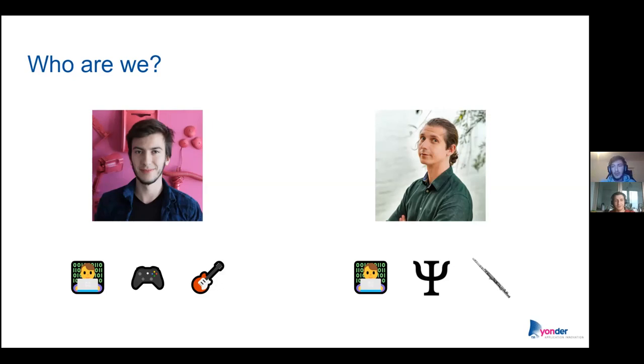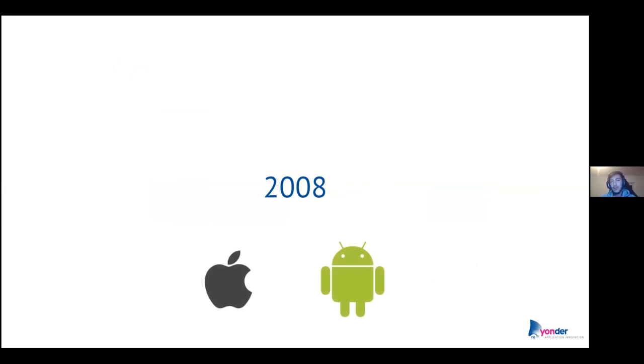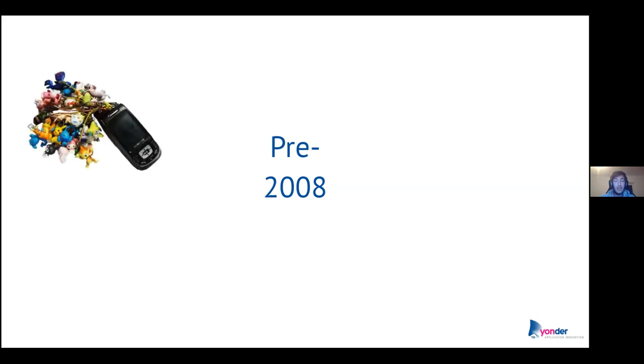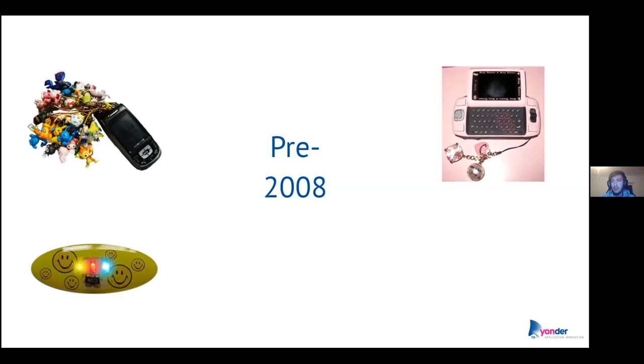Now that we've passed introductions, let's go straight into the more serious part of this webinar. Our journey begins in 2008 — this is the landmark year, the year where all the cell phones we knew transitioned into what we call today's smartphones. It's the year where Apple and Google introduced what we know today as iOS and Android. Pre-2008, people had a bit of weird behavior using their cell phones — lots of charms, stickers that lit up when someone called, physical keyboards, Blackberries everywhere, and flip phones.